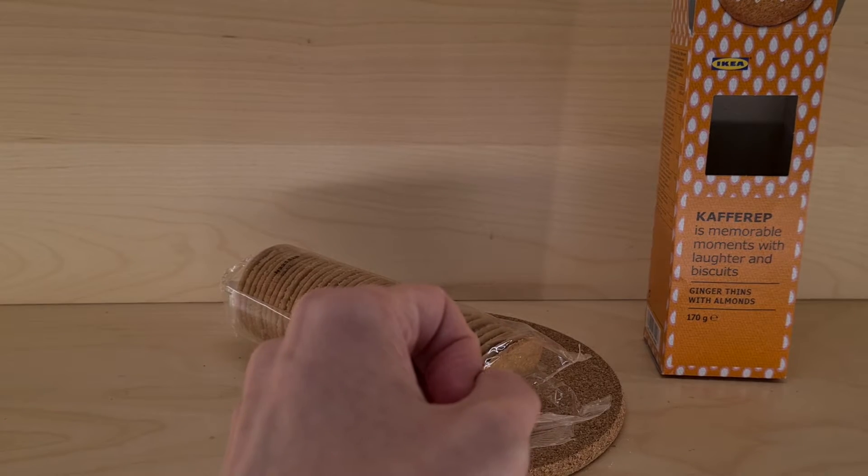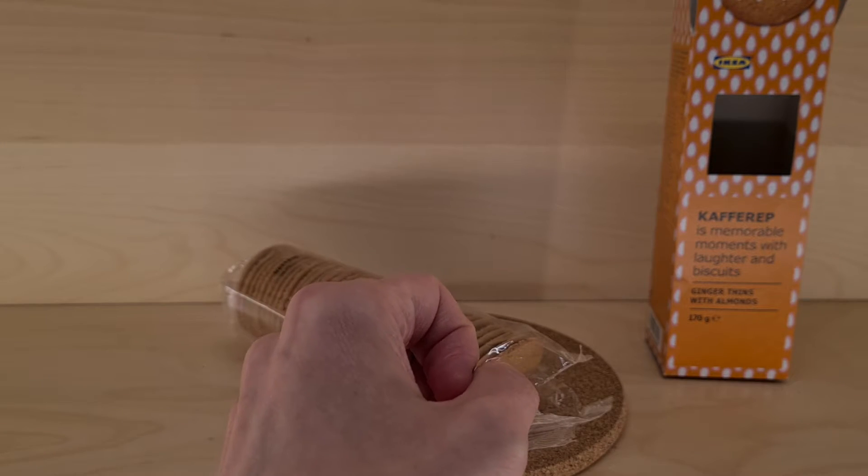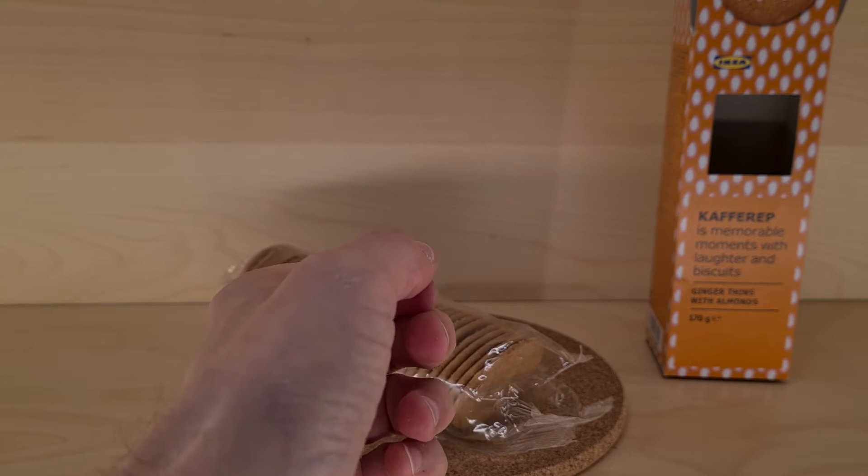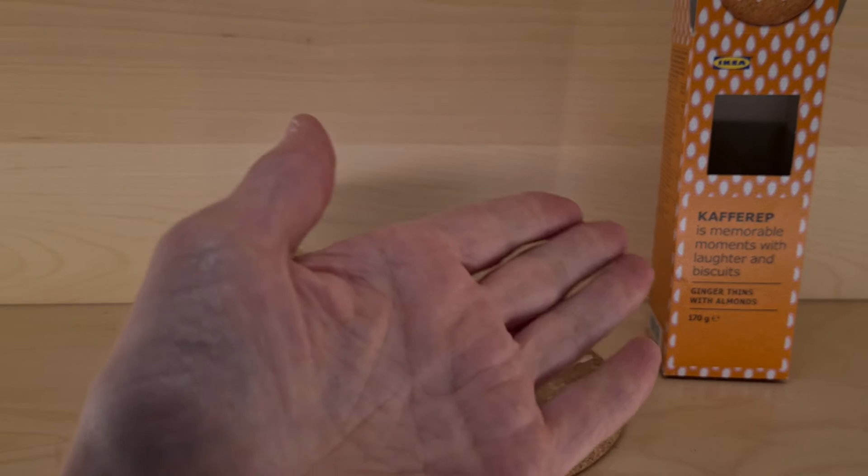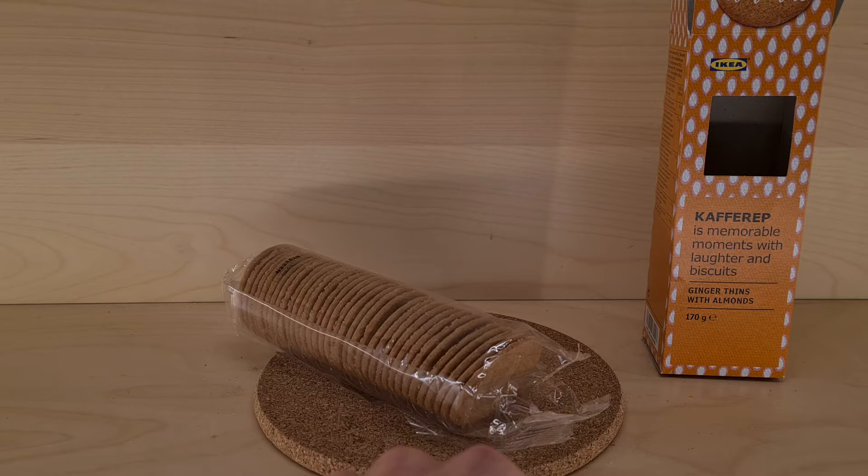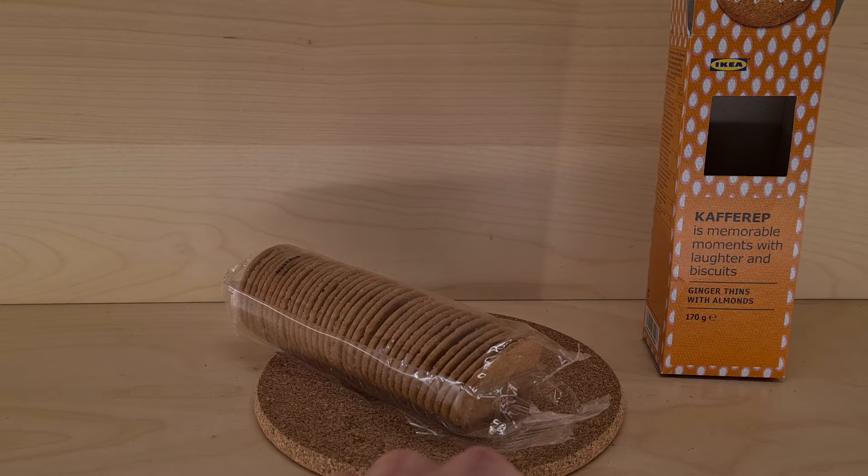So if you happen to find yourself in IKEA and you need some ginger thin biscuits along with your Billy bookcase - Billy bookcase and biscuits, who'd have thought it? IKEA and biscuits, it's a wild combination that I've known for quite some time and many people have.